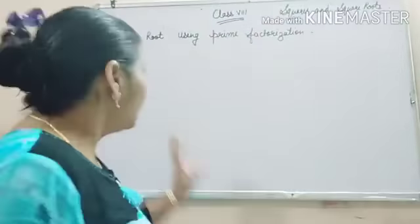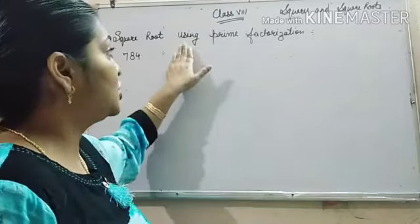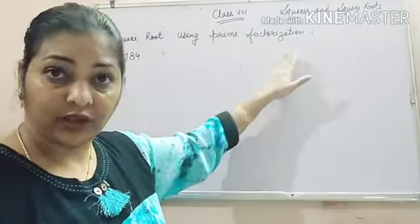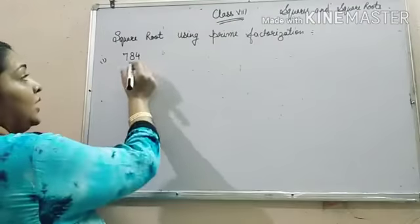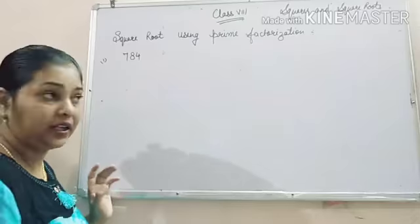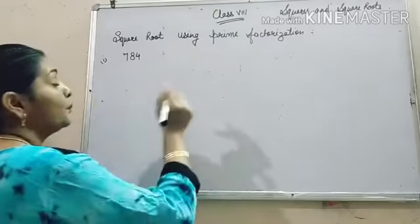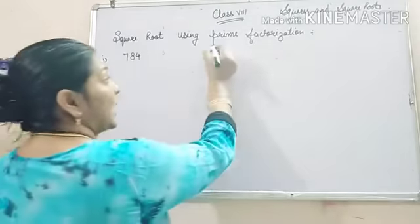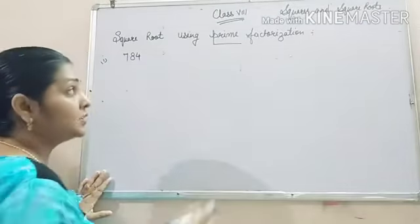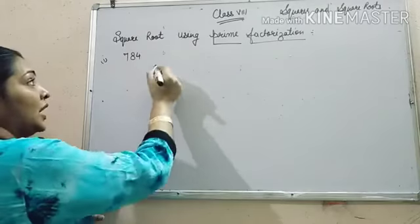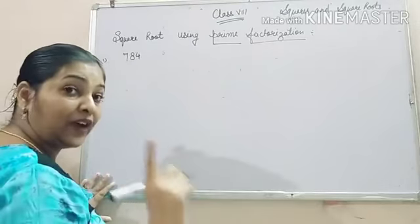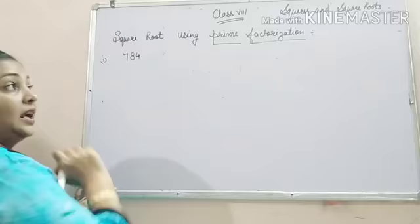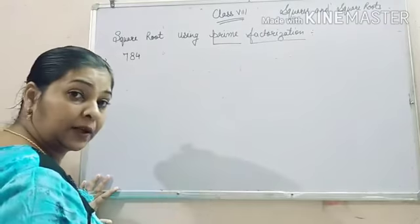Today, I will teach you how to find square root using prime factorization and for this I have taken an example 784. Now, prime factorization. Prime, you know what are prime numbers? Factorization. So, we have to take out all the factors of 784 which are prime.